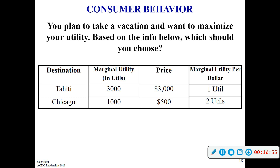So now we bring in our measure for utility, and it's what we call utils. Utils are basically units of happiness that you get from doing things. A hypothetical situation: you're considering two different vacations — you can go to Tahiti or you can go to Chicago. The marginal utility in utils: you get 3,000 utils for going to Tahiti, you get 1,000 for going to Chicago. So just based on that, you would say you're going to go to Tahiti because it's going to give you three times as much happiness as going to Chicago.